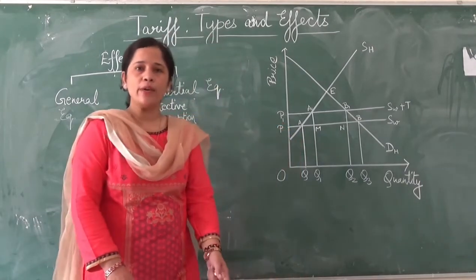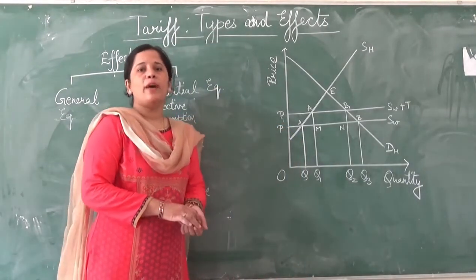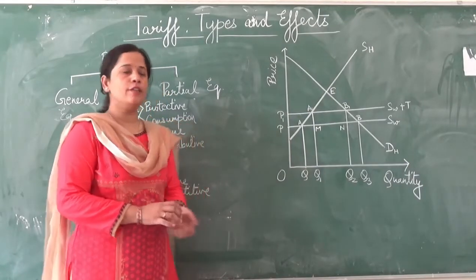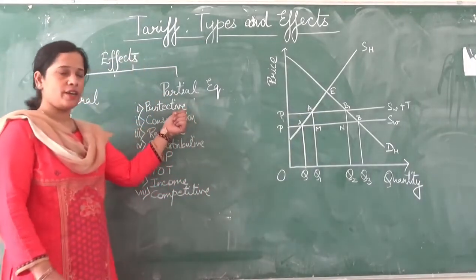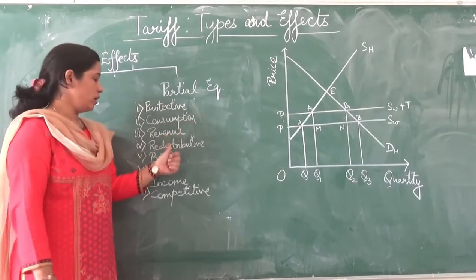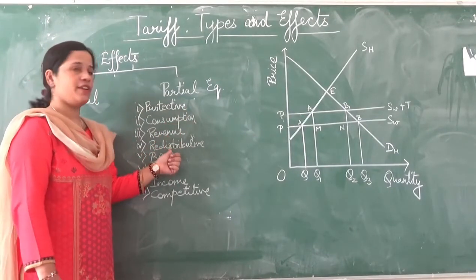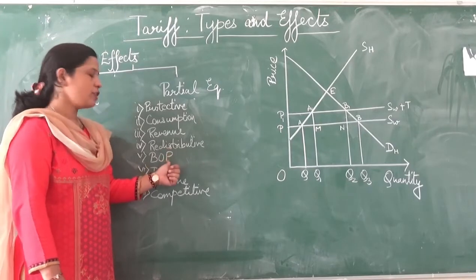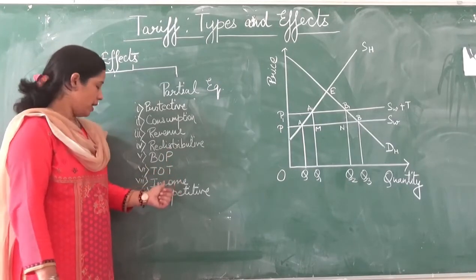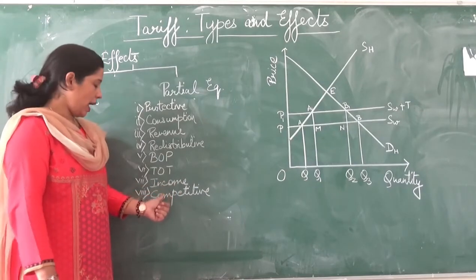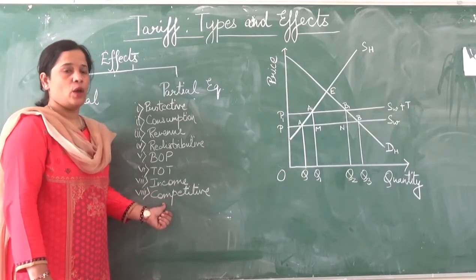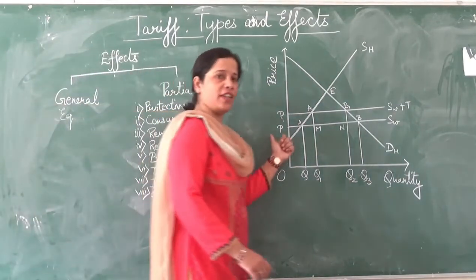Professor Kindleberger classified the partial equilibrium effects into eight types: the first is protective effect, second is consumption effect, third is revenue effect, fourth is redistributive effect, fifth is balance of payment effect, sixth is terms of trade effect, seventh is income effect, and the eighth is competitive effect. We will explain all these effects with the help of a diagram.